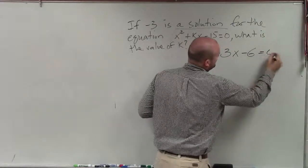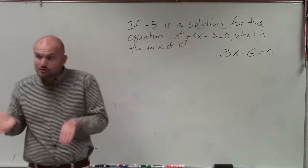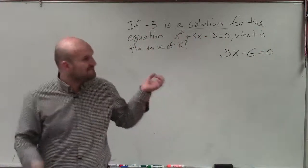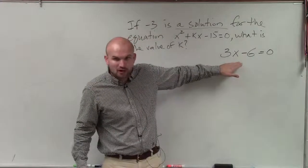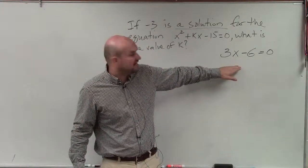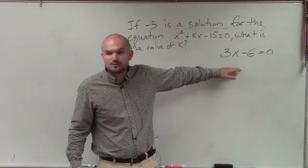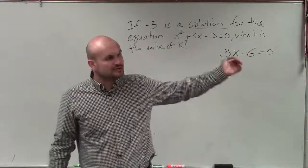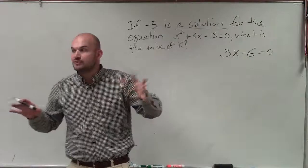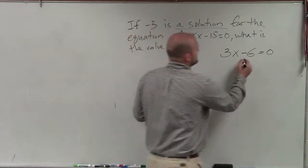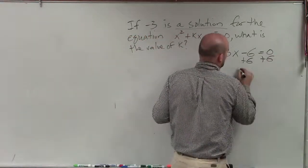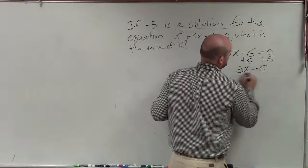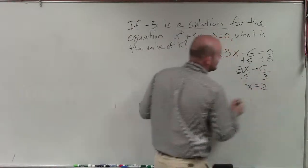3x minus 6 equals 0. If I was going to determine the solution, what the solution represents is the value of your missing variable x that makes this equation true. Now, what we learned in Algebra 1 and Algebra 2 is to do that, we need to use inverse operations, which we're going to actually review again in this class. But let's just go ahead and solve. So I had 3x equals 6 divided by 3 divided by 3, x equals 2.